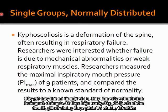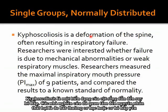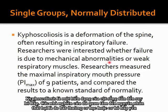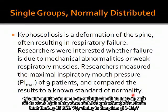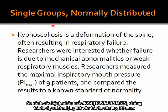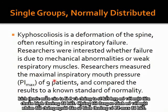Let's try an example: single groups, assuming normally distributed. Kyphoscoliosis is a deformation of the spine often resulting in respiratory failure. Researchers were interested whether the failure is due to mechanical abnormalities or weak respiratory muscles. Researchers measured the maximal inspiratory mouth pressure (PI max) of nine patients and compared the results to a known standard of normality. We are comparing patients with kyphoscoliosis, measuring their PI max, with a sample size of nine, comparing to a known control population.